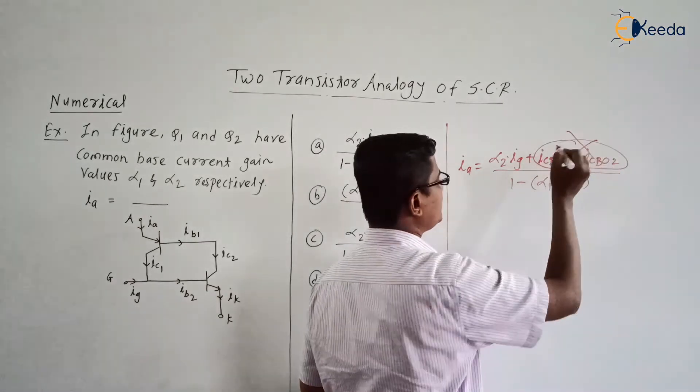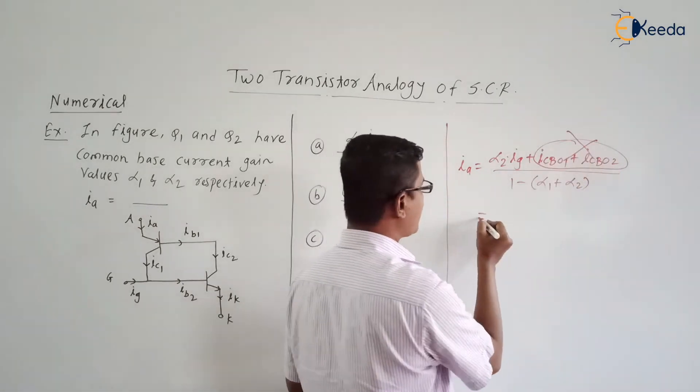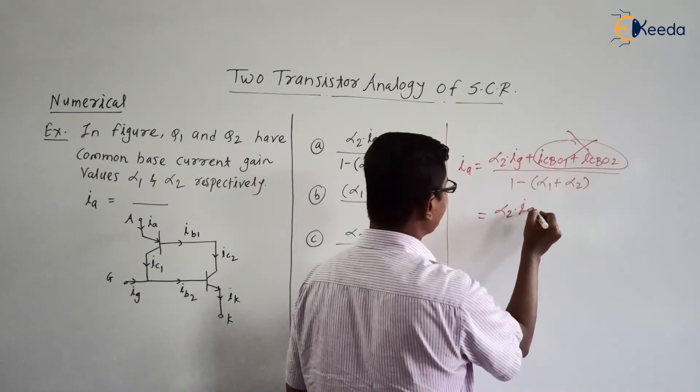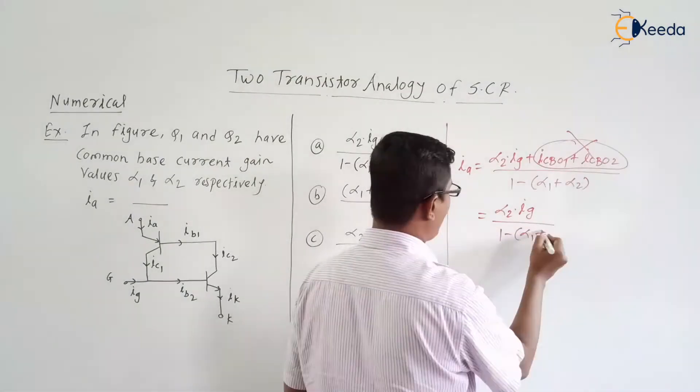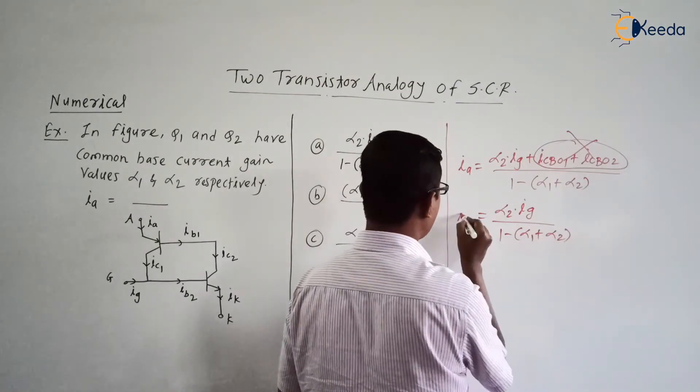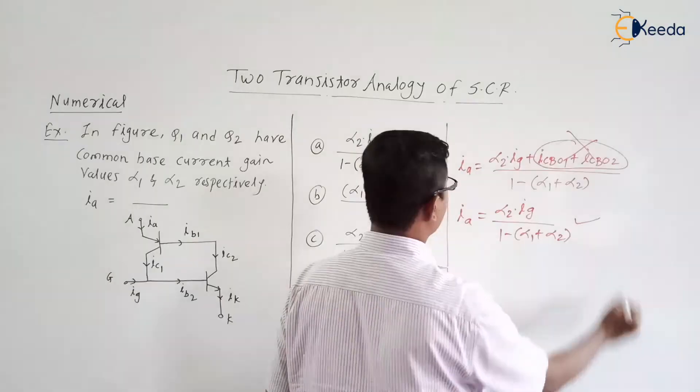So if we neglect the leakage currents then what is the expression? It is like alpha 2 into Ij upon 1 minus alpha 1 plus alpha 2. This is the final expression for Ia.